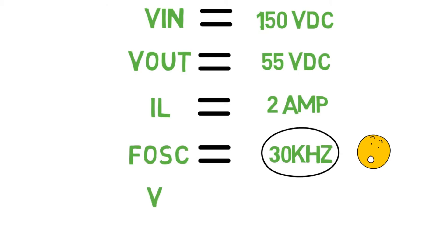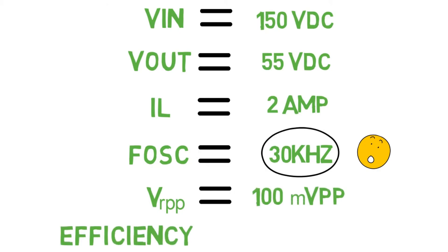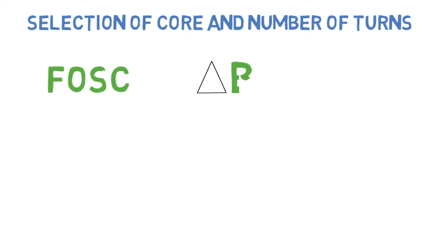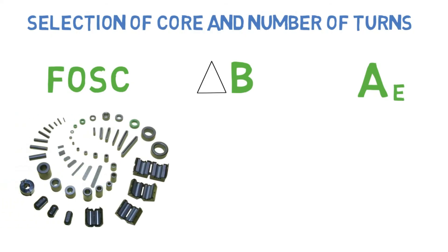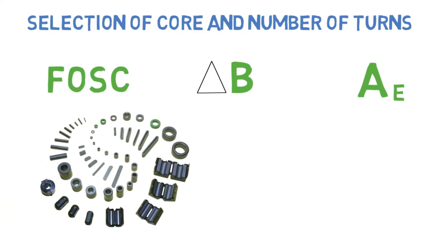The output ripple we will permit in this design is 100 millivolts peak to peak, and the efficiency of the converter η is 85%. Now we'll start designing the converter. The first step is the selection of the core and calculation of the number of turns. The equation for number of turns depends on operating frequency, flux density ΔB, and the effective area of the core. Initially, we select a core and peak flux density for that core.